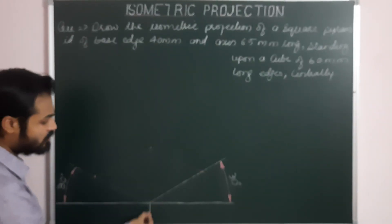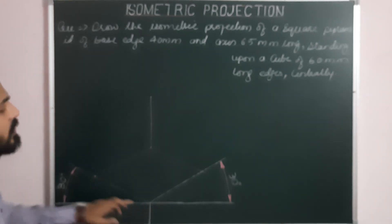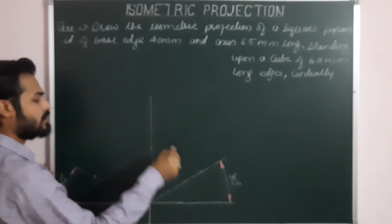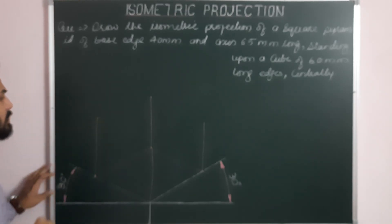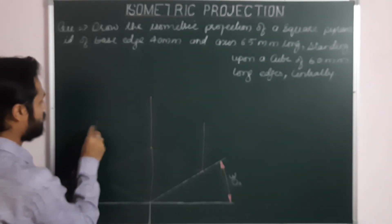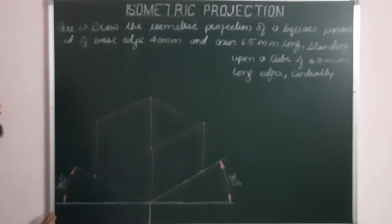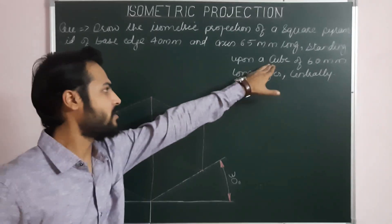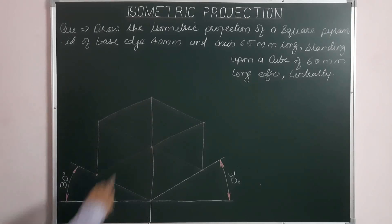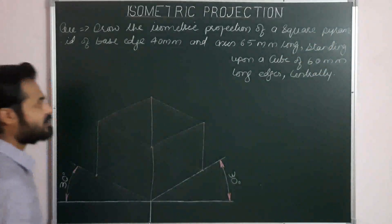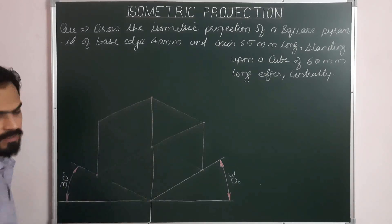Next, for the height — which is also 60 — from all four corners we draw lines parallel to the third axis, or parallel to the vertical iso axis, for a length of 60. Again, we use the isometric scale for the conversion or for construction. This completes the projection of the cube, the first solid, which is resting on its base on HP, and on its upper face the square pyramid will rest centrally.